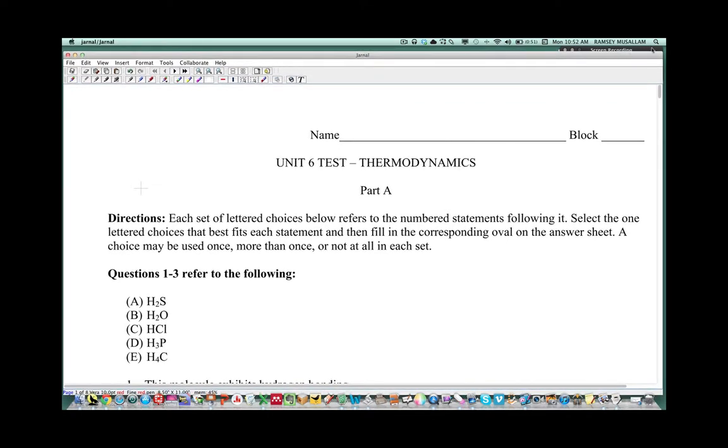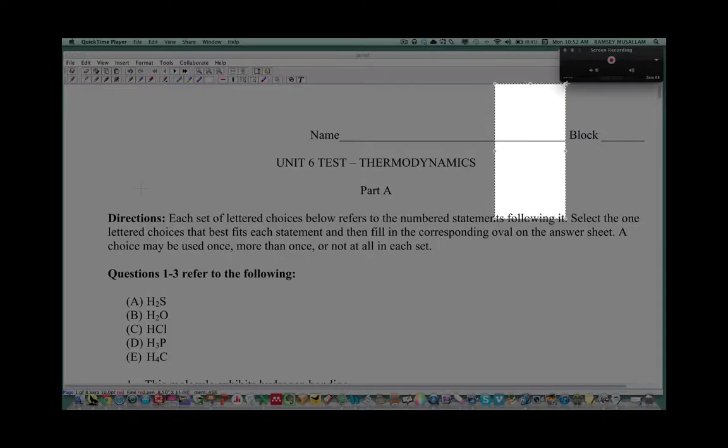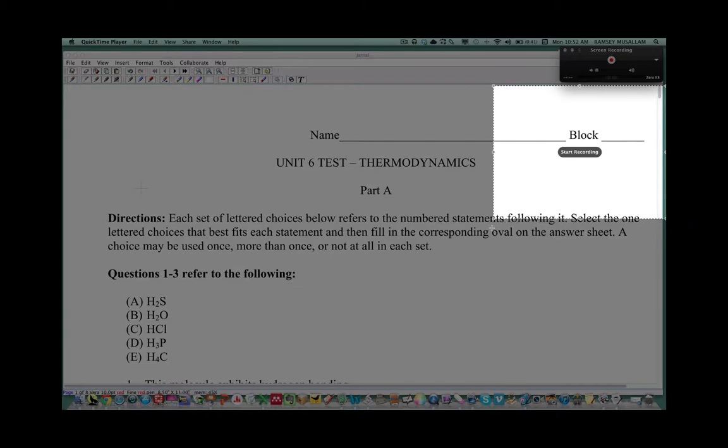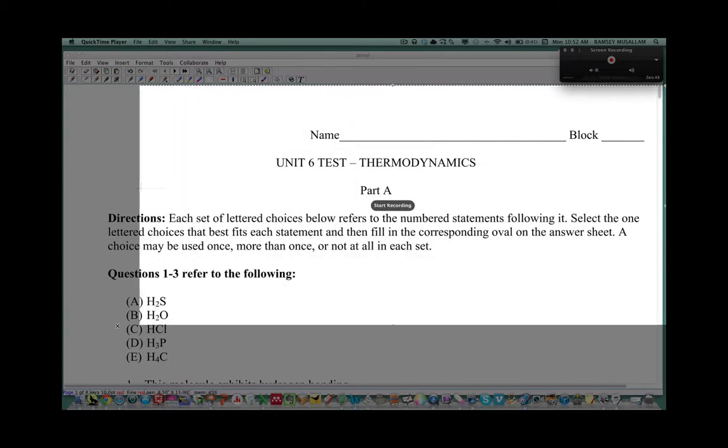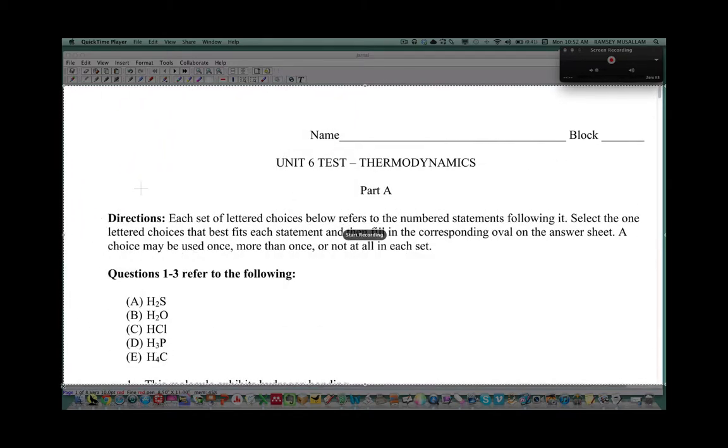What we're going to do is click this record button. When you click this record button, you get this thing showing up in the middle. This only shows up if you have the Lion upgrade. If you don't have the Lion upgrade to your Mac, it's going to by default record the whole screen. What I'm going to do is click on this and choose the portion of the screen I want to record. Notice I'm going to choose only the portion where the worksheet exists. Then I'm going to click this start record button.